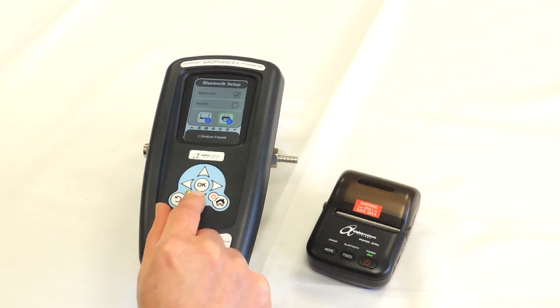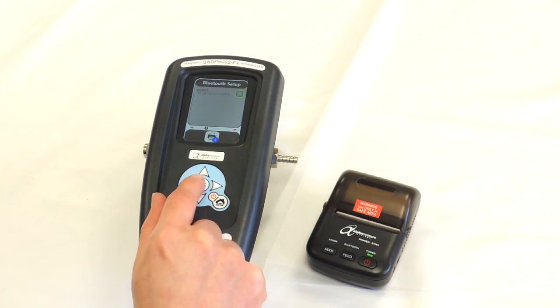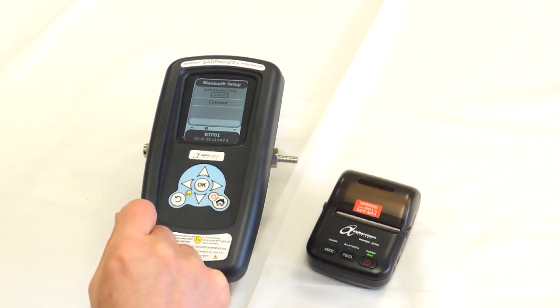We then go down to the device that's been found, we press OK and then we get another screen showing the Bluetooth printer that's able to be connected to. We press OK to tick the box and we go to another screen. We get an authorization code which is preset and you don't have to change that but it can be user set so that you can have a code to connect to the Bluetooth printer.